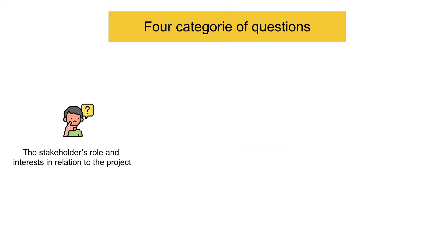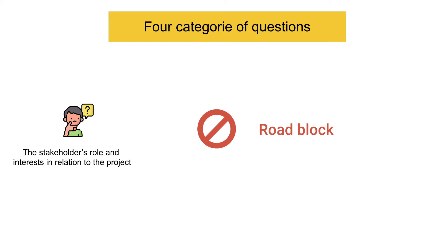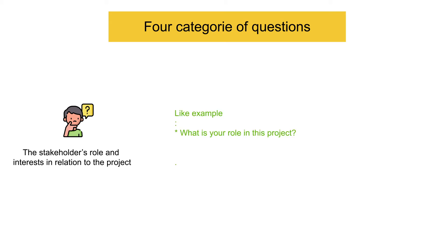Type two is the stakeholder's role and interest in relation to the project. If you understand a stakeholder's background and motivation, it's easier to identify where you will meet opposition to or support for your specific research and resulting design changes. For example: What is your role in this project? How long have you been involved? What did you do before this project?